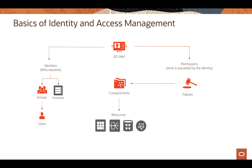IAM users have one or more different kinds of IAM credentials to use OCI resources. These credentials include a console password for signing into the OCI console, API signing keys in PEM format for making API requests that require authentication, and auth tokens — Oracle-generated tokens — that can be used to authenticate with third-party APIs.